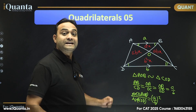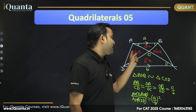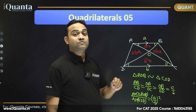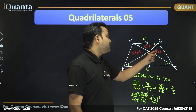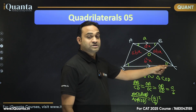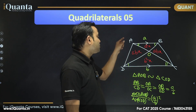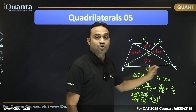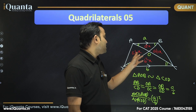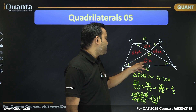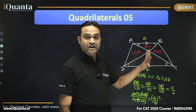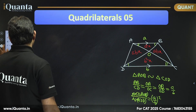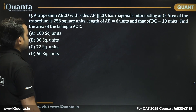So in any trapezium, these two triangles — AOD and BOC — will be of equal area. Apart from this, we can also say that the product of the areas of triangles AOB and COD equals A²B²X², and we can verify this from the expressions A²X and B²X. I hope this part is clear regarding trapezium. Now let's try a few questions based on this.